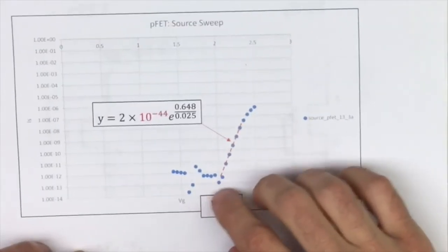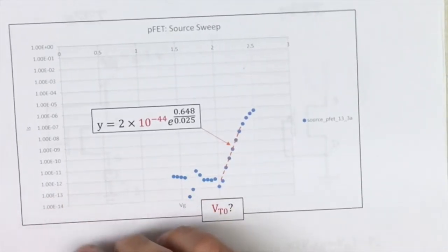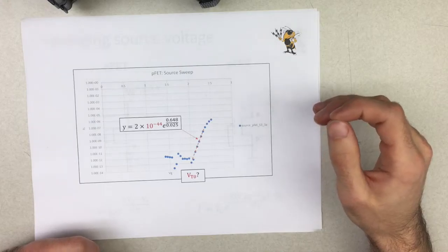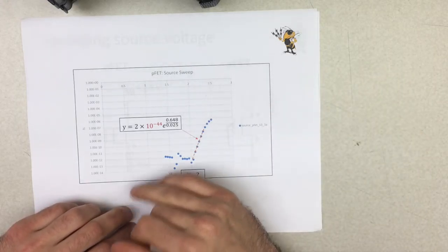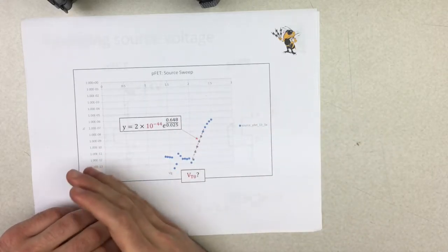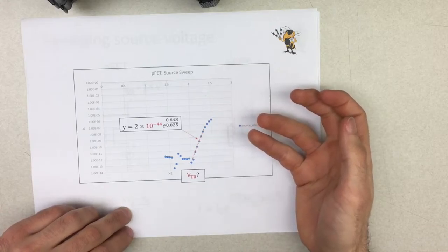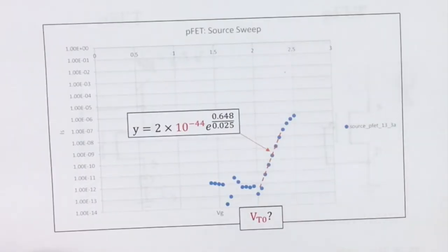So we would expect the same general trend where it's off, off, off, and then all of a sudden when there is a sufficient source voltage to turn the PFET on, then that's when you see an increase in current. However, we just got a shifted version of what we expected, which resulted in a really low saturation current. However, the slope was fine, so we got a decent thermal voltage.